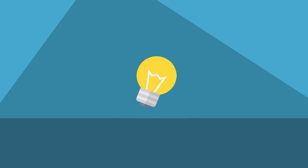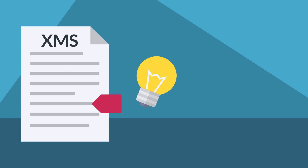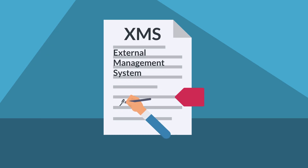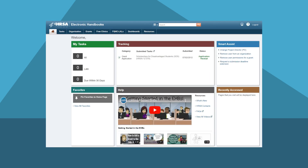Helpful tip! The first time you click login, you will see an agreement to sign with XMS, which is the external management system HRSA uses to manage the login process. You will need to sign this agreement annually. After signing the agreement, you will land on the EHBs homepage or account setup page, and it's as simple as that.